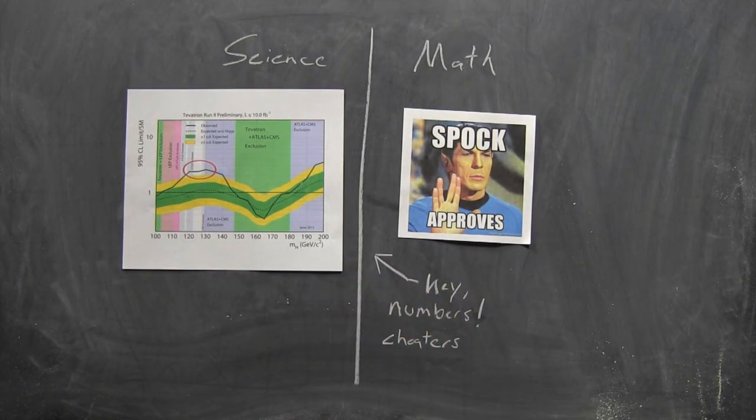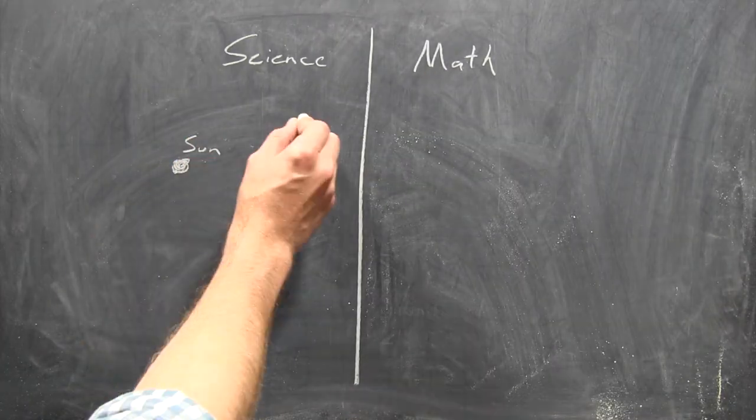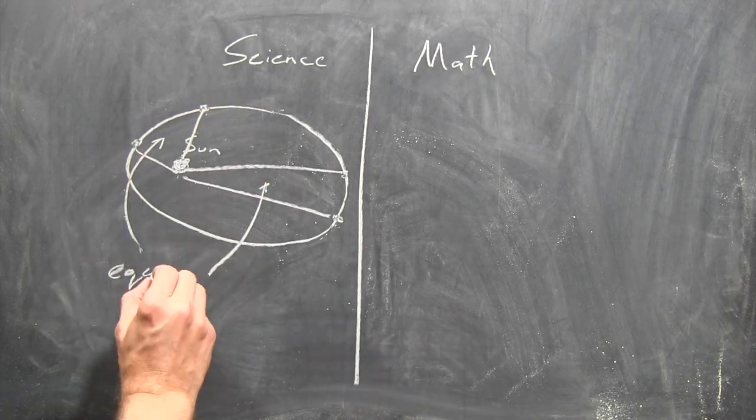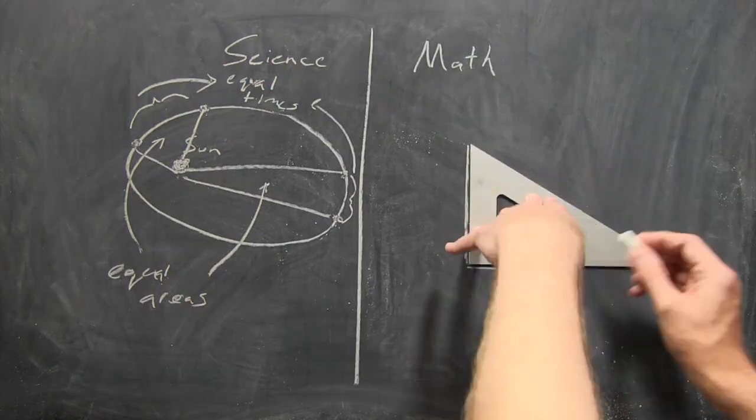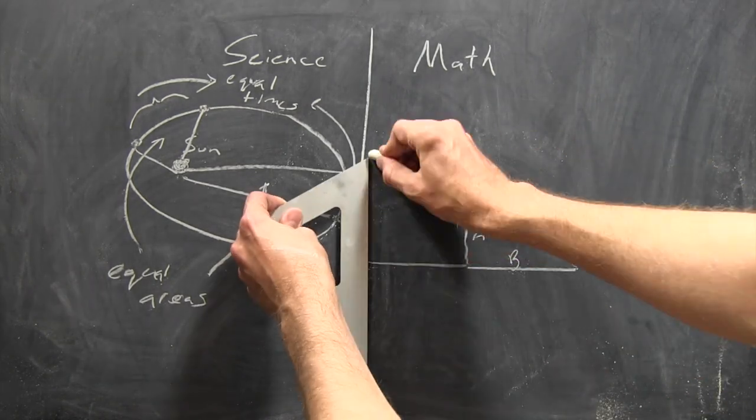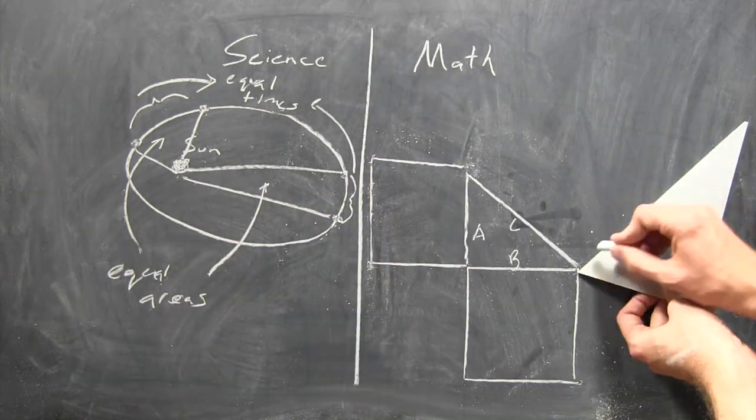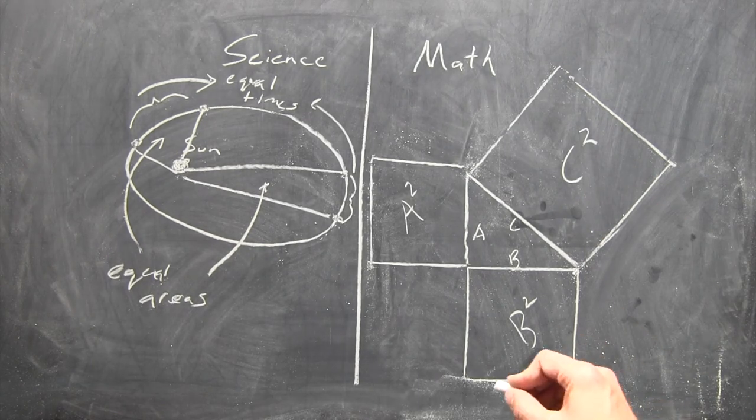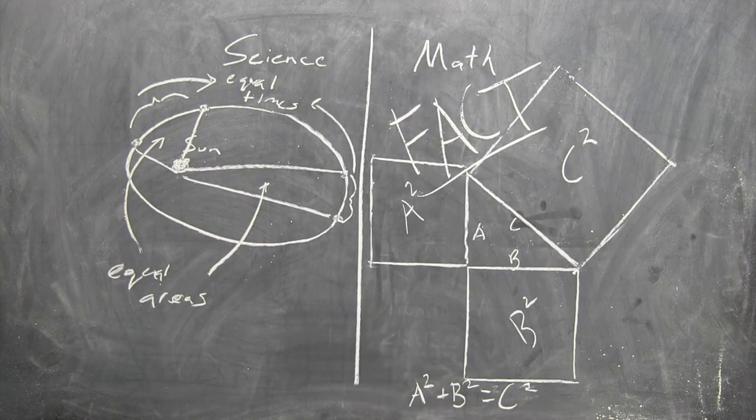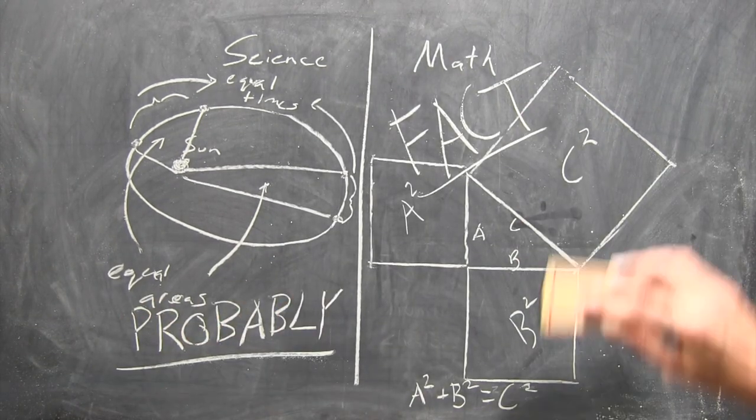I think most mathematicians are probably with Plato on this. They'd tell you that mathematical truth is more pure and essential and fully known than anything in science. You've probably heard that evolution is just a theory, even gravity is just a theory, because science can't really ever fully prove anything. But math has proofs and we know for sure they're right. But why is science stuck defending theories about the imperfect real world while math has these perfect truths?